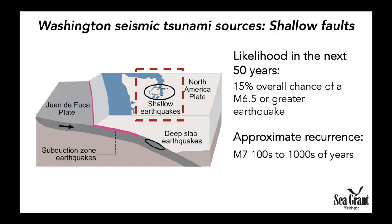The next source I wanted to talk about are shallow faults. Where they cross the seafloor, they're able to generate tsunamis as well. We've got lots of shallow faults crisscrossing Washington State, and after studying many different faults, we've got a group likelihood of about a 15% chance of a magnitude 6.5 or larger earthquake in the next 50 years. These have recurrence times in the hundreds to thousands of years, depending on which fault you're looking at.